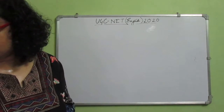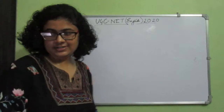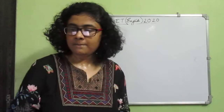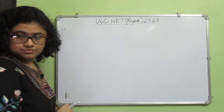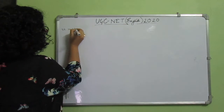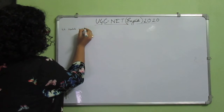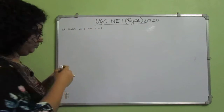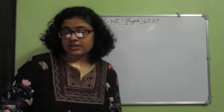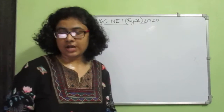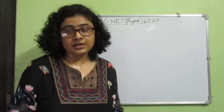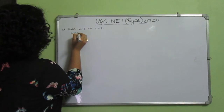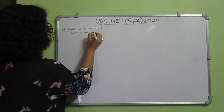Question number 89. Again, match list 1 and list 2. List 1 contains some of the words in the English language which are borrowed from other languages — specifically from Indian languages.